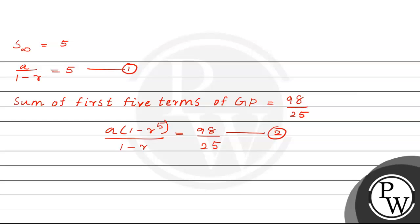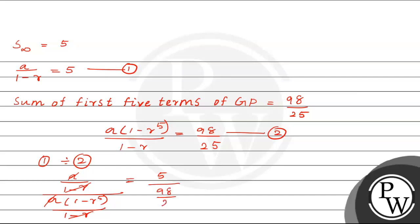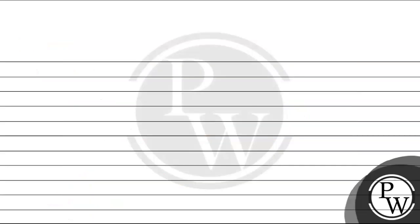Now we will divide both equations. Equation 1 divided by equation 2 gives us: A divided by 1 minus R, divided by A times 1 minus R to the power 5 divided by 1 minus R. Here A cancels and 1 minus R cancels. Simplifying, we get 1 divided by 1 minus R to the power 5 equals 125 divided by 98.